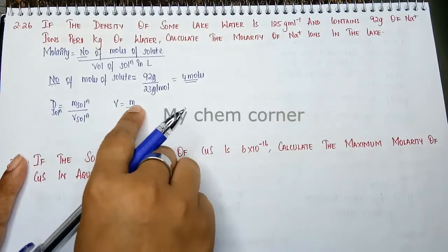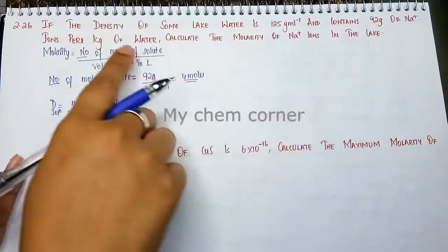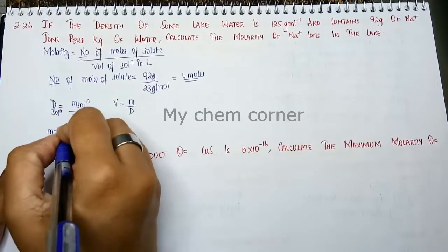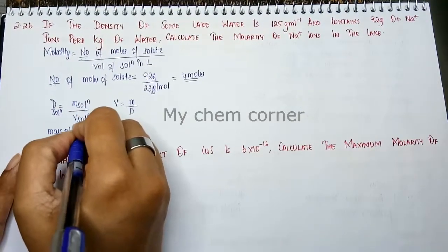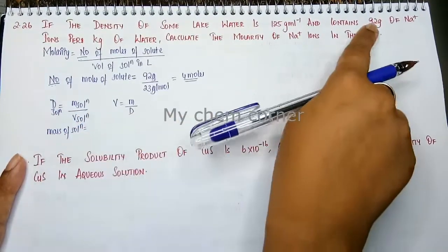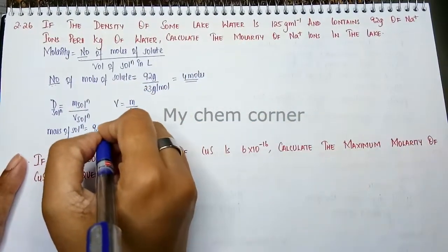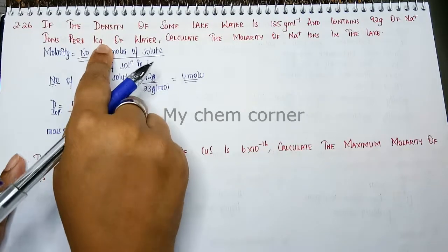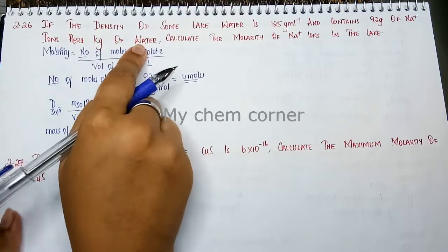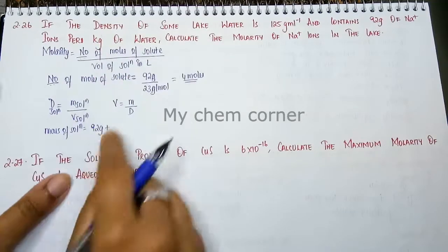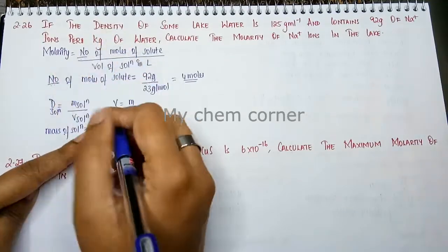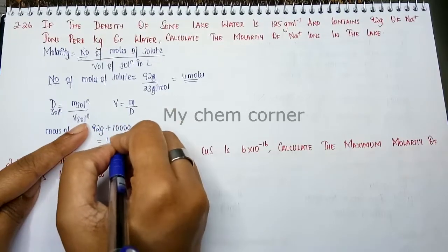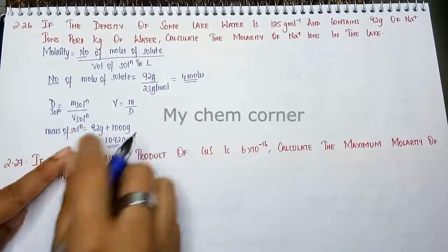Now mass of sodium and mass of water are given. Mass of solution is not given. So we can calculate that mass of solution equals mass of solute, which is 92 grams, plus mass of solvent, which is 1 kilogram of water. When I convert this to grams, this will be 1000 grams. When I simplify this I will get 1092 grams, which is the mass of solution.